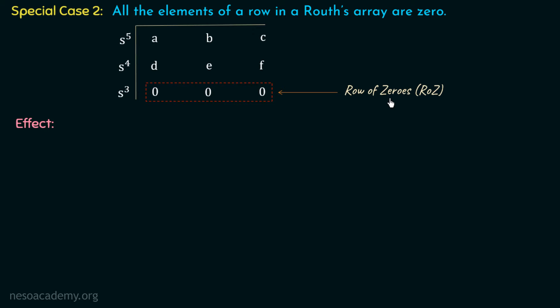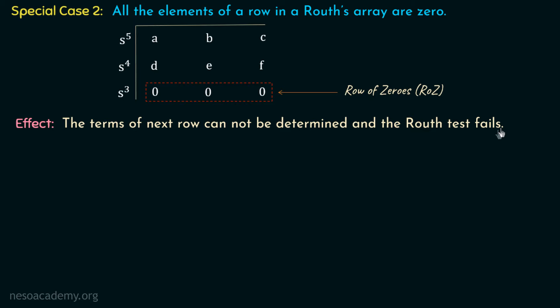What is the effect of this row of zeros? The terms of the next row cannot be determined and the Routh test fails. We can see that if we move on to form further rows, all the terms in the next row will be infinite. That's why we said the terms of the next row cannot be determined, and hence the Routh test fails. In this way, we have discussed the difficulty due to the presence of a row of zeros.